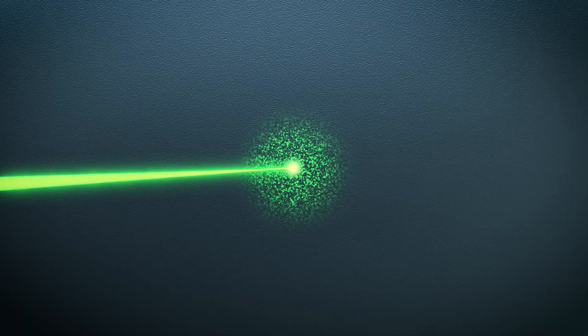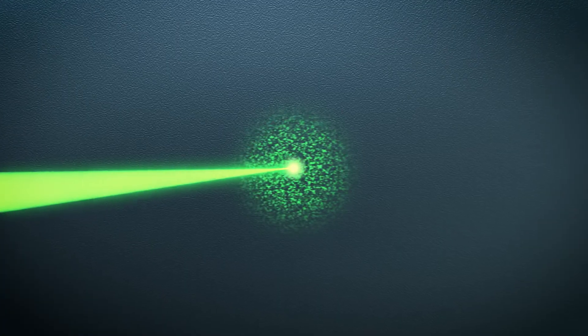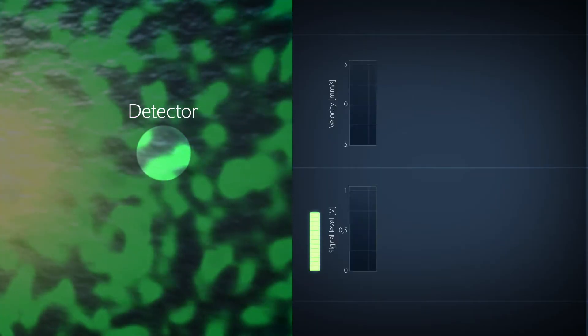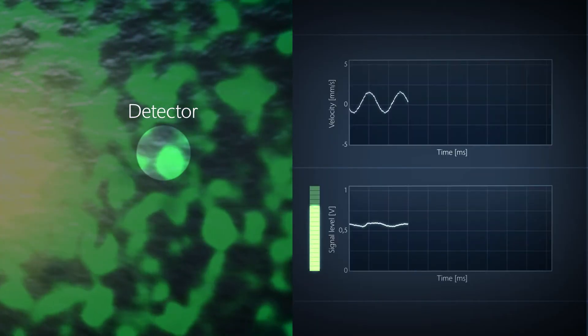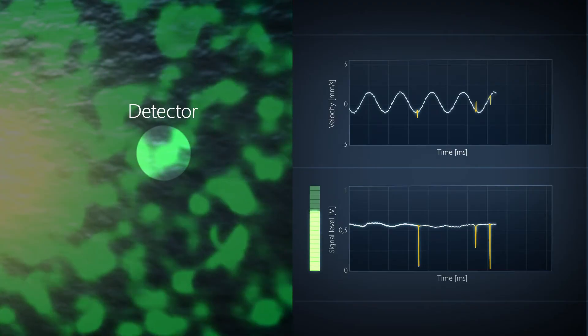The laser point now looks grainy and the pattern changes with the perspective of the observer. Also the photodetector of a laser sensor represents an observer and while measuring vibration the pattern and the amount of perceived light changes constantly.